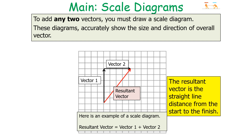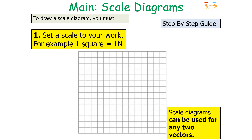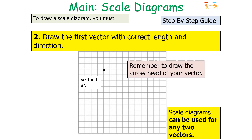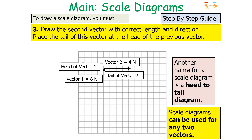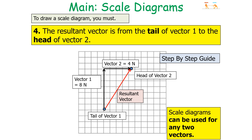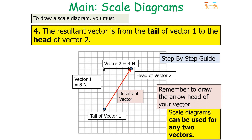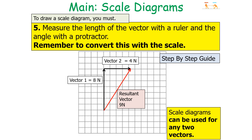The resultant vector is the straight-line distance from the start of the diagram to the finish. To draw a scale diagram: first, set a scale — for example, one square equals one newton. Draw the first vector with the correct length and direction, remembering to draw the arrowhead. Then draw the second vector with the correct length and direction, placing the tail of this vector at the head of the previous vector — this is also called a head-to-tail diagram. The resultant vector runs from the tail of vector 1 to the head of vector 2. Measure its length with a ruler and its angle with a protractor, then convert the length back using your scale.